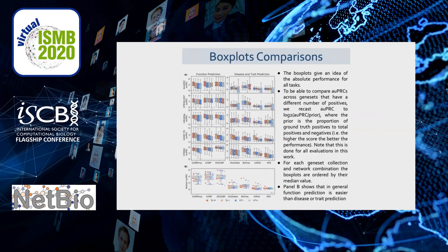The box plot comparisons give an idea of absolute performance across all tasks. Panel B shows that function prediction in general is easier than disease and trait prediction.